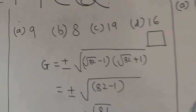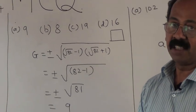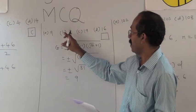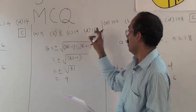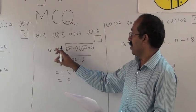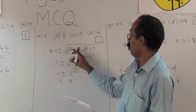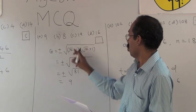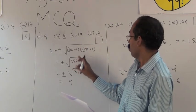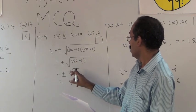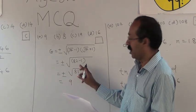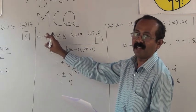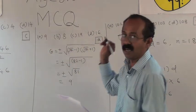Next example: what is the geometric mean of (√82 − 1) and (√82 + 1)? The alternatives are a) 9, b) 8, c) 19, d) 16. Geometric mean g = ±√[(√82 − 1)(√82 + 1)]. After solving this bracket, we get √(82 − 1) = √81, and √81 = 9. Option a represents the answer 9, so a is the correct alternative.